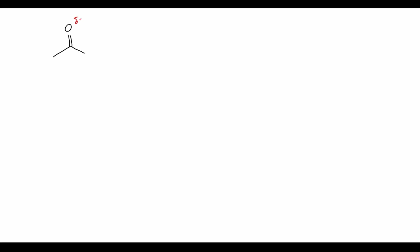So how are we going to go about reducing this carbonyl? Let's take a look at the structure of acetone. Oxygen is more electronegative than carbon, so there's a dipole: the oxygen has a partial negative charge and the carbon bonded to it has a partial positive charge. In addition to that inductive effect, we can also draw a resonance structure where we swing the electron pair in the double bond up to oxygen, giving oxygen a full negative charge and carbon a full positive charge.